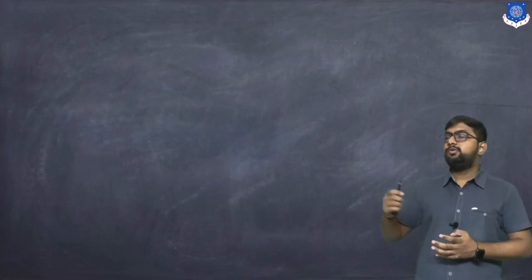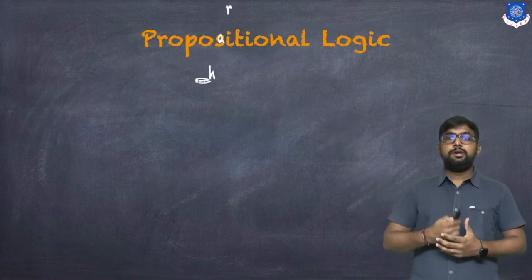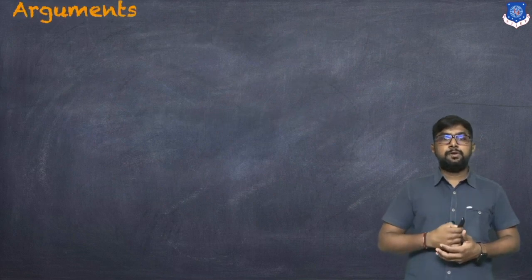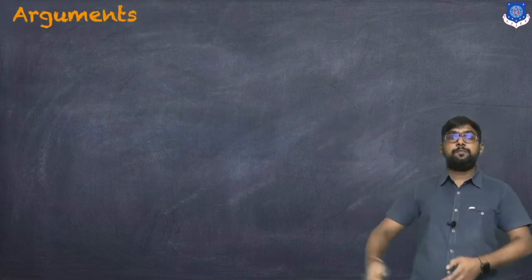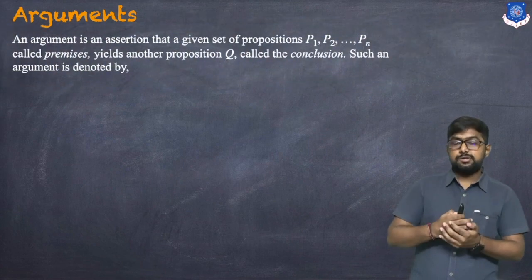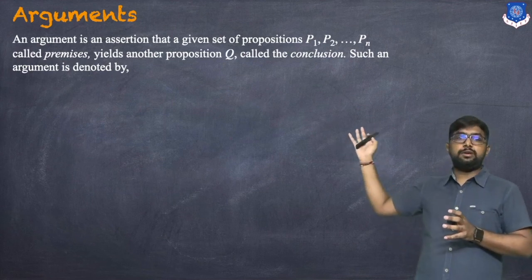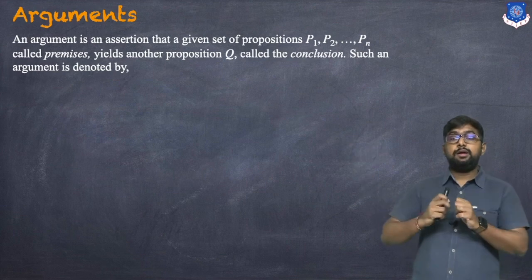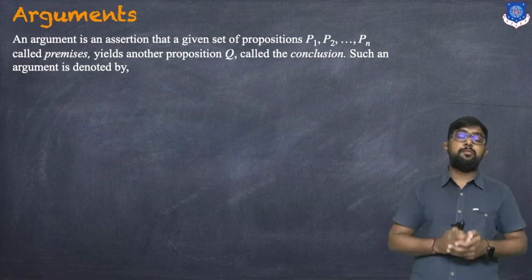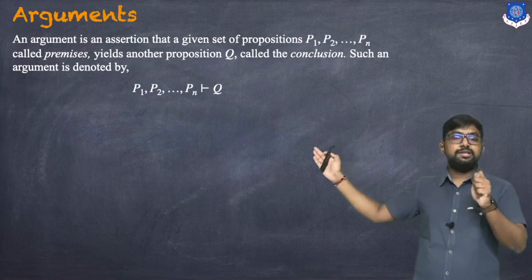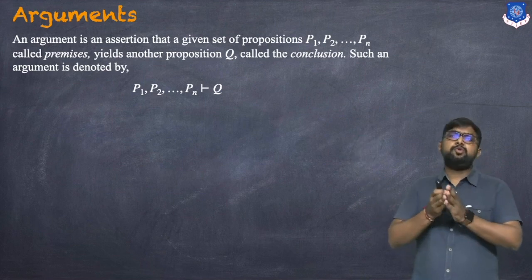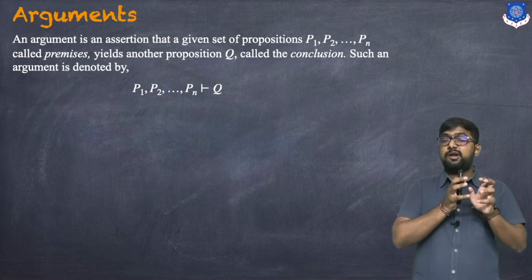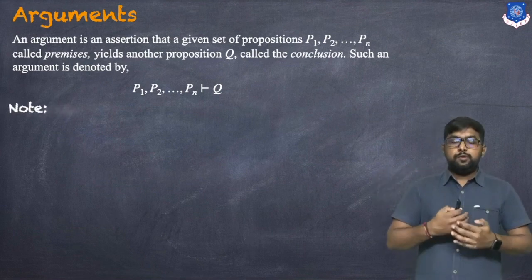This is Paragav Suthar and today we are continuing with propositional logic. In this session, we will discuss what is an argument and some examples based on that. An argument is an assertion that a given set of propositions — p1, p2, up to pn — called premises, yields another proposition Q called the conclusion. Such an argument is denoted as p1, p2, ..., pn ⊢ Q.